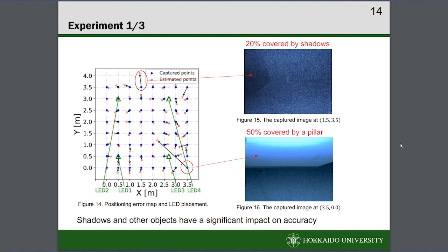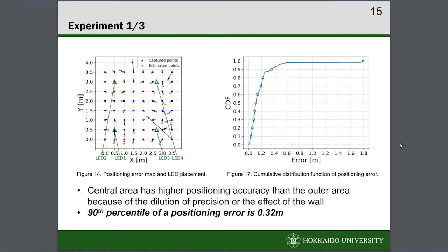For example, the images at 1.5, 3.5 and 3.5, 0.0 are covered by shadows or objects, with these two points having the worst overall positioning accuracy. From the result of experiment 1, we also found that the central area, which is surrounded by LEDs, tends to have higher positioning accuracy than the outer areas.